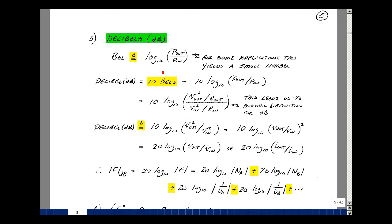There already exists the log of a transfer function. That's called a bell, named after Alexander Graham Bell. It's the log base 10 of power out to power in. In some audio applications, this is a very small number, so they multiply it by 10 and call it a decibel. In Latin, deci means 10.